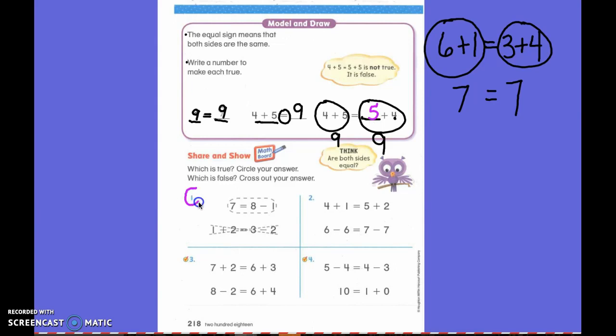Down here, we are going to circle which is true and cross out which is false. Does 8 minus 1 equal 7? If I check on my number line, we notice that 8 minus 1 really does equal 7. That is true. So I am going to circle that with my pencil.